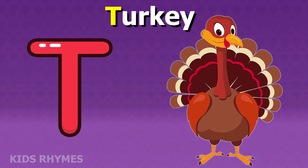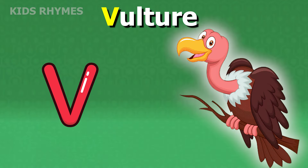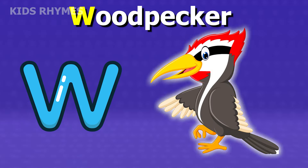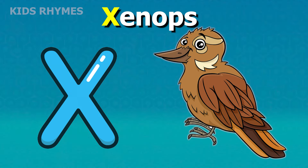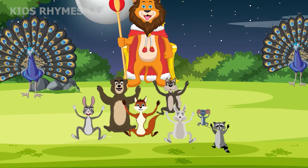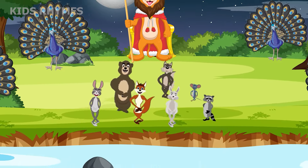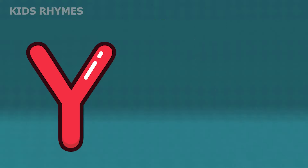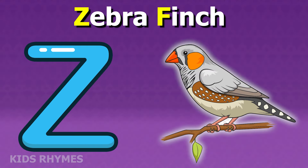T for turkey, U for umbrella bird, V for vulture, W for woodpecker, X for xenops, Y for yellowbird, Z for zebra finch.